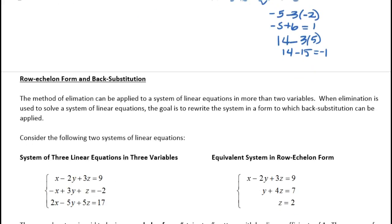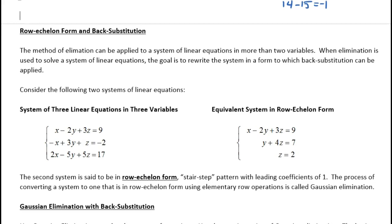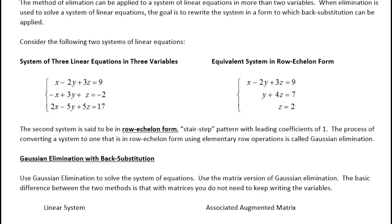The method of elimination can be applied to a system of linear equations in more than two variables. When elimination is used to solve a system of linear equations, the goal is to rewrite the system in a form to which back substitution can be applied. Consider this system of three variables — x, y, and z — and its equivalent reduced matrix form.